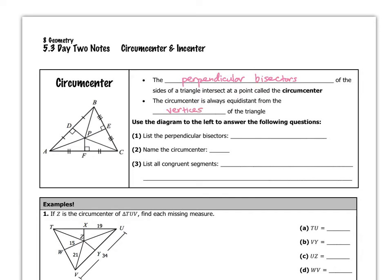If you look at triangle ABC to the left, we're going to answer some questions about this triangle. Question one asks us to list the perpendicular bisectors. There are three perpendicular bisectors of this triangle. The first one is segment PF. You can see PF is a perpendicular bisector because it intersects side AC of the triangle at a right angle and it also bisects that side, as shown by those congruency marks.